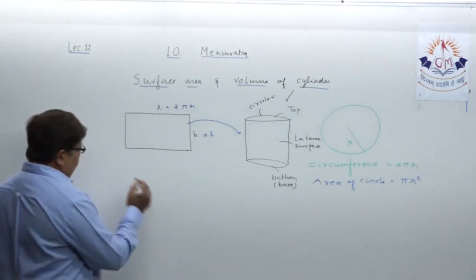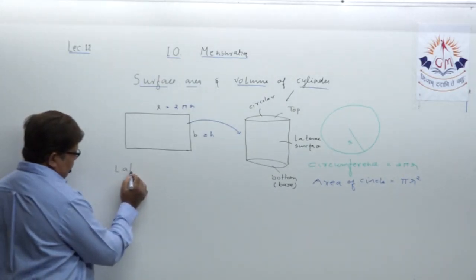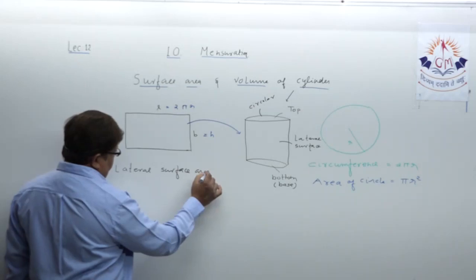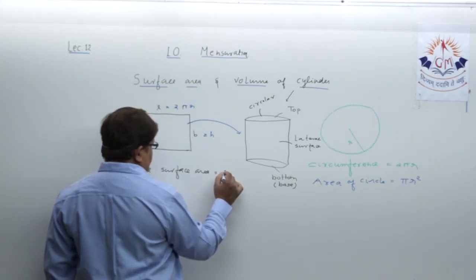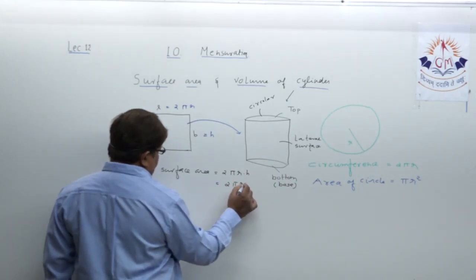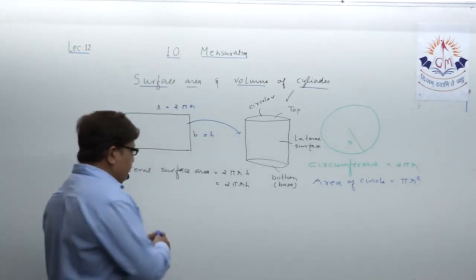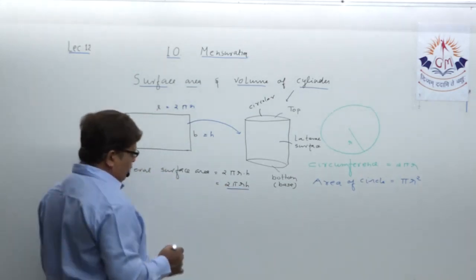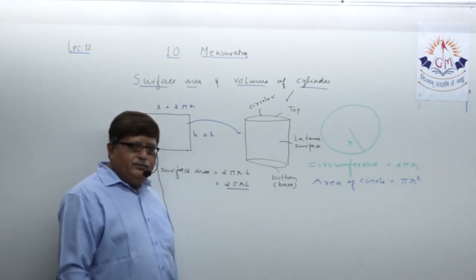So the first formula for the cylinder: lateral surface area equals 2πr into h, that is 2πrh. That is the lateral surface area formula. Is it clear in your mind?